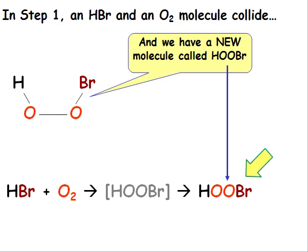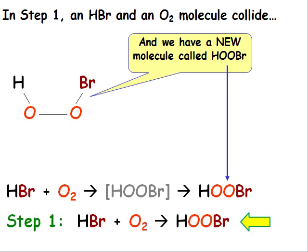The bonding in the HOOBR molecule is significantly different than that in the unstable activated complex, even though the formulas for the two species are the same. The HOOBR molecule is much more stable than the HOOBR activated complex. We can summarize step 1 as HBr plus O2 gives HOOBR.